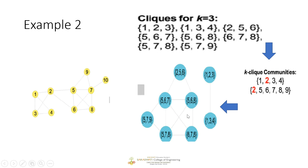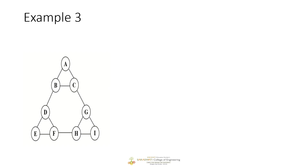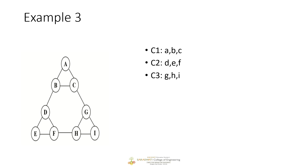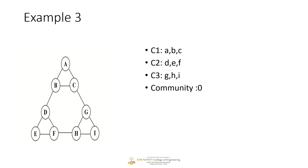Let's take one more example. In this graph, how many cliques do we have with value k equal to 3? We have clique ABC, clique DEF, and clique GHI. But do we have communities? There are no common nodes between C1 and C2, between C2 and C3, or between C1 and C3. So in this given network structure there are no communities, because the cliques don't have nodes in common. I hope these problems are clear — try to practice more problems on cliques. Thank you.